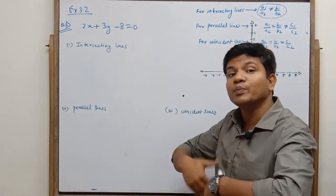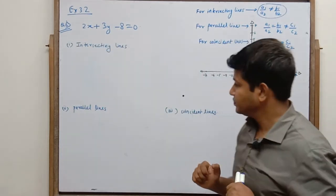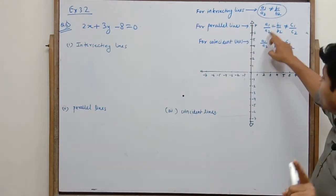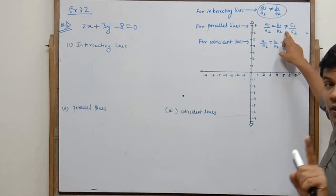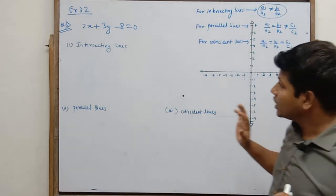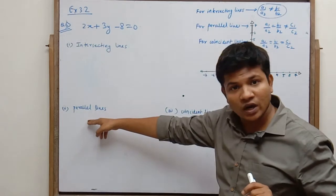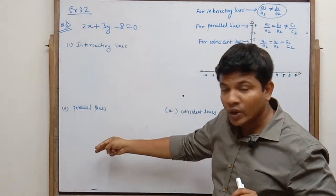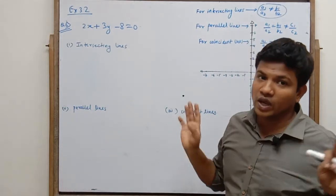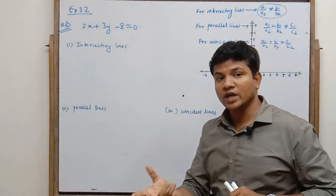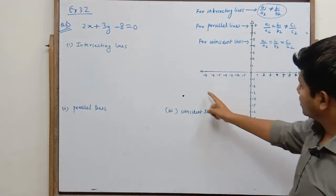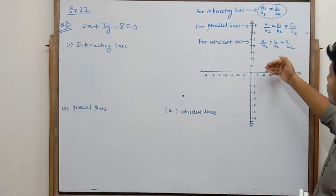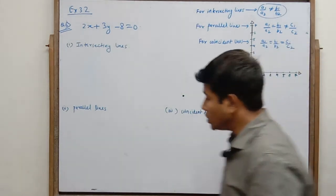हमारे पास a1, b1 है, अभी हमें a2 और b2 देना है। Parallel line के लिए condition है: a1/a2 should be equal to b1/b2, and that should not be equal to c1/c2. तो a1 और a2 का ratio और b1 और b2 का ratio equal होना चाहिए, but c1 और c2 का ratio equal नहीं होना चाहिए। And for coincident lines, यह तीनों ही ratio equal होने चाहिए: a1/a2 = b1/b2 = c1/c2.